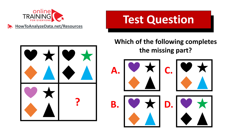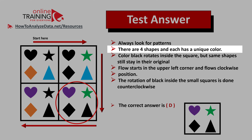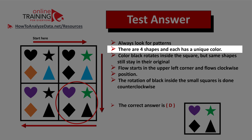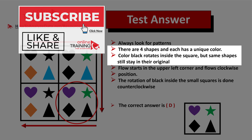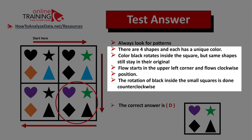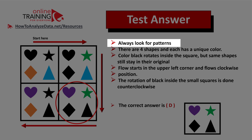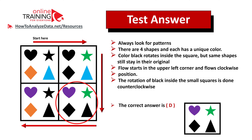There are four shapes inside the square and each shape has a unique color. The shapes stay in place — the only thing that changes is which shape is colored black. The pattern of black color rotates counterclockwise. The flow among the shapes starts in the upper left corner and goes clockwise, but the rotation of the black color inside the squares goes counterclockwise — that's the tricky part. The correct answer is choice D. Always look for patterns.